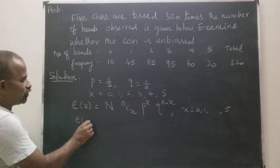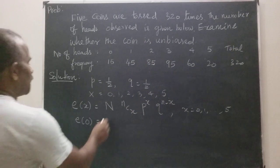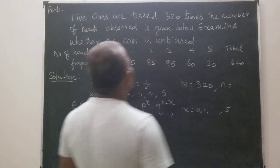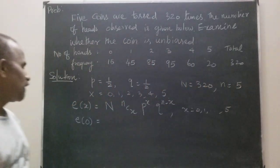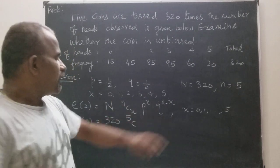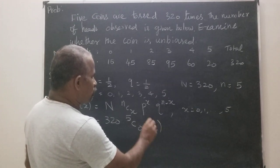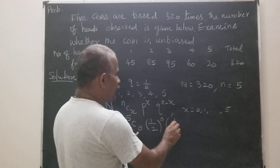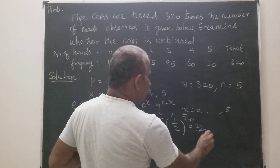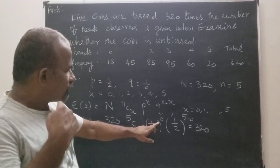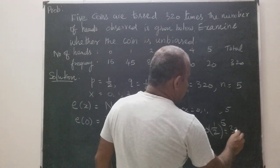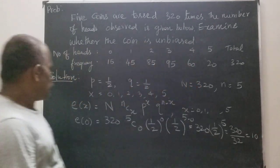Now we construct E(x) for x from 0 to 5. E(0) = 320 · 5C0 · (1/2)^0 · (1/2)^5. Here N = 320 (number of trials) and n = 5 (number of coins). 5C0 = 1, (1/2)^0 = 1, so E(0) = 320 × (1/32) = 10.